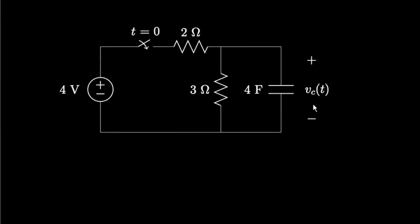Here's an example of a circuit that contains a single capacitor, a couple of resistors, an independent voltage source, and a switch that is used to change the makeup of the circuit at some reference time that we refer to as T equals zero. This is an example of a switched, first-order capacitive network.